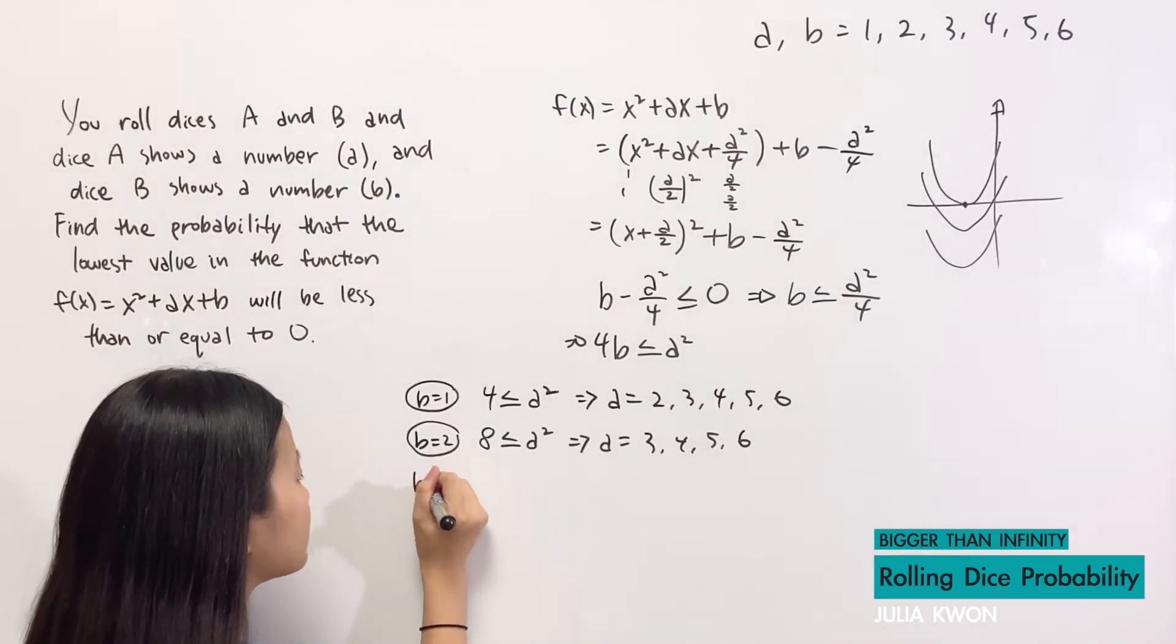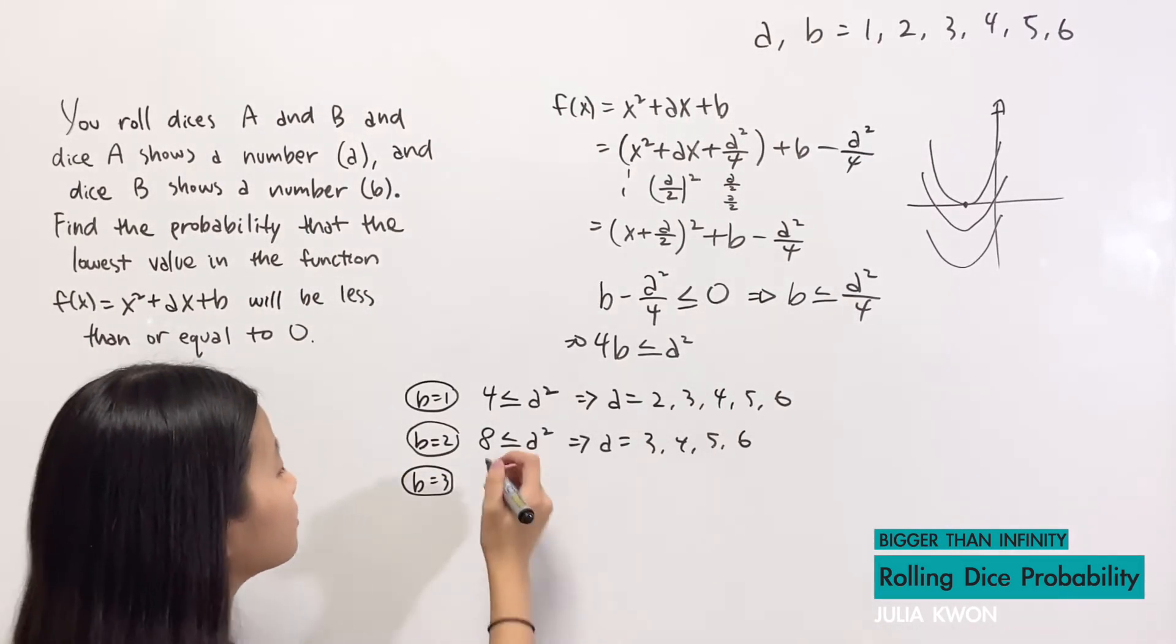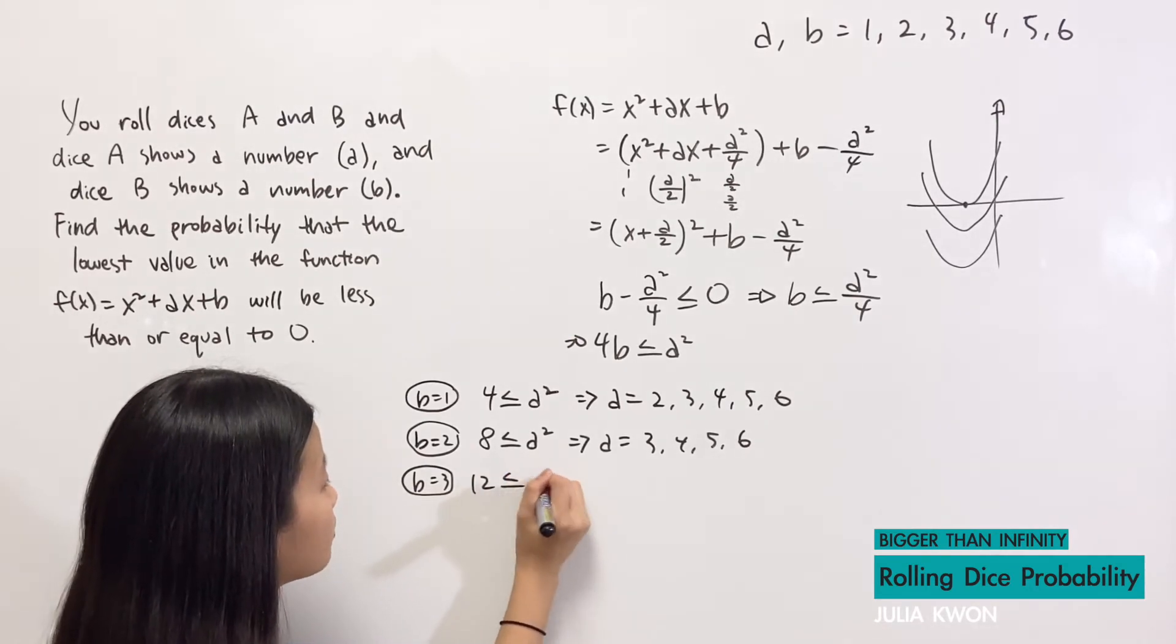And if b equals 4, then 16 will have to be less than or equal to a².